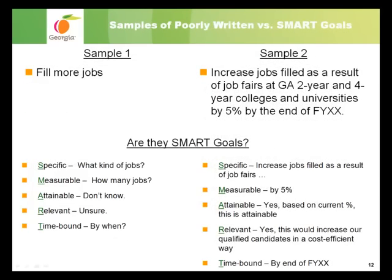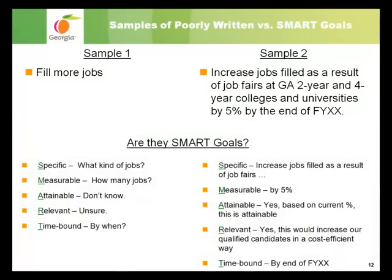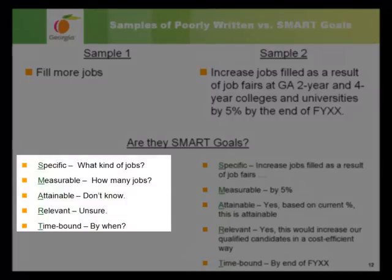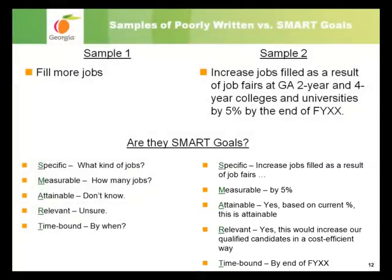Let's look at some samples of goals for an HR recruitment specialist. The first example is 'fill more jobs,' while the second example is 'to increase jobs filled as a result of job fairs at Georgia two-year and four-year colleges and universities by 5% by the end of the fiscal year.' The first example doesn't provide enough information to be SMART — it isn't specific, measurable, or time-bound, so we can't determine if it's attainable or relevant. The second example is a SMART goal. Pause the presentation for a moment to read through the SMART criteria for the goal on the right, then continue the training.